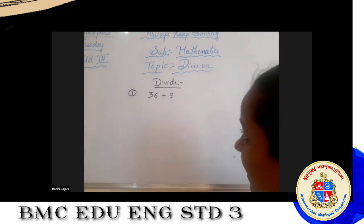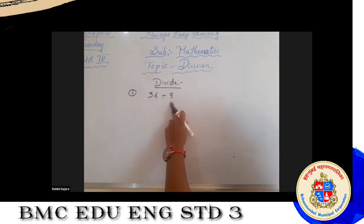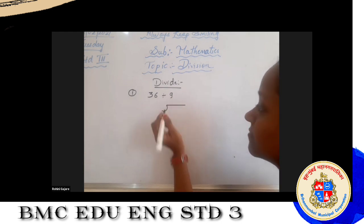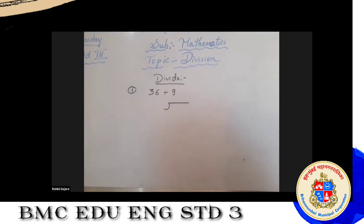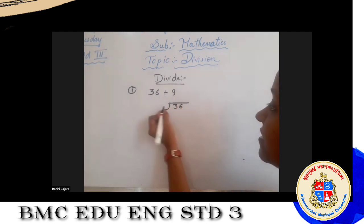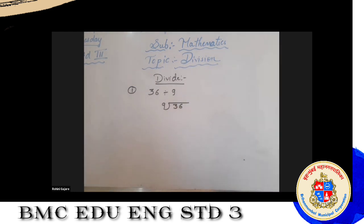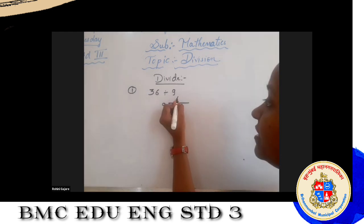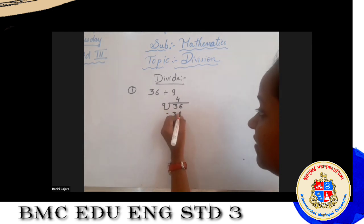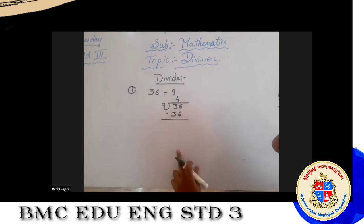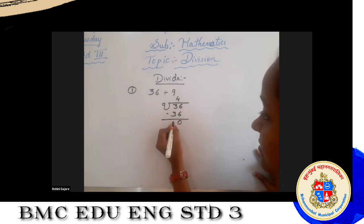On the board: 36 divided by 9. Dividend is 36, divisor is 9. Say the table of 9 — 9, 18, 27, 9 fours are 36. So write 4 as the quotient and 36 below. Subtract: 6 minus 6 is 0, 3 minus 3 is 0. The 4 is the quotient, 9 is the divisor, 36 is the dividend, and the leftover 0 is the remainder.